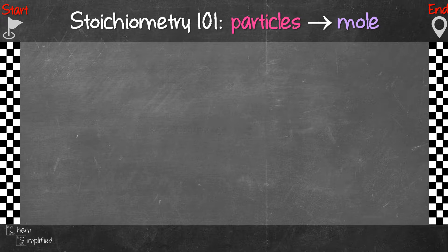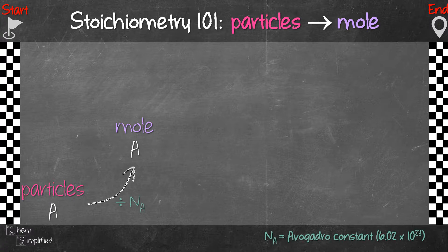Now instead of mass, let's say the question gives you particles like the number of atoms or the number of molecules and it asks you to find its mole. So that means we're going from particles A to moles of A. In this case, we will need to involve the Avogadro's number. So all we have to do is divide the given number of particles with 6.02 times 10 to the power of 23. That is the Avogadro's number. So going from particles to moles, we divide with Avogadro's number.